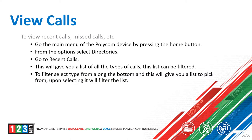To view recent calls, missed calls, and other types of calls, press the home button on the phone to access the main menu. From there, select Directories, then select Recent Calls — this will give you a list of all types of calls. This list can also be filtered depending on how you want to view it.